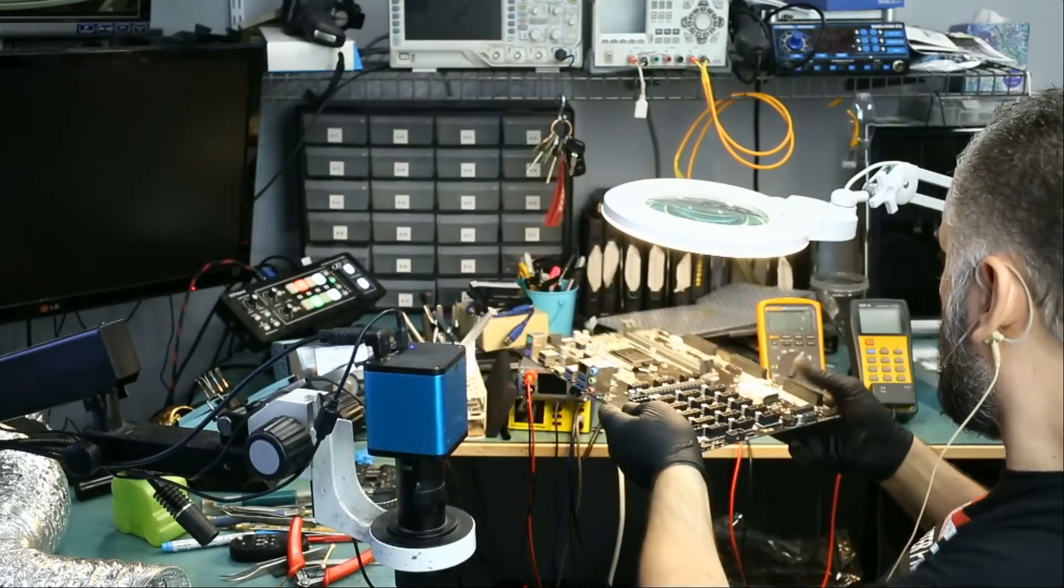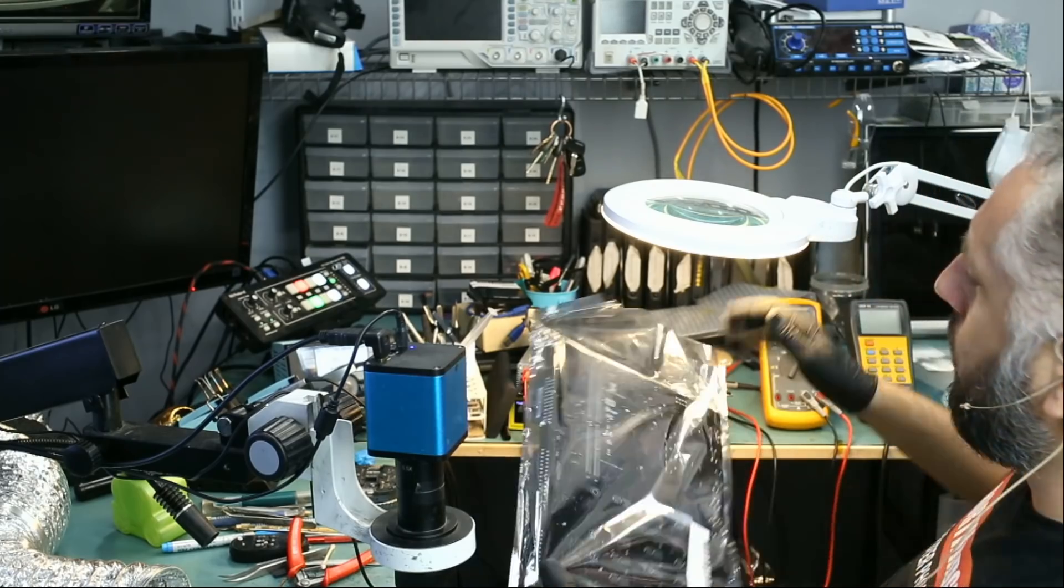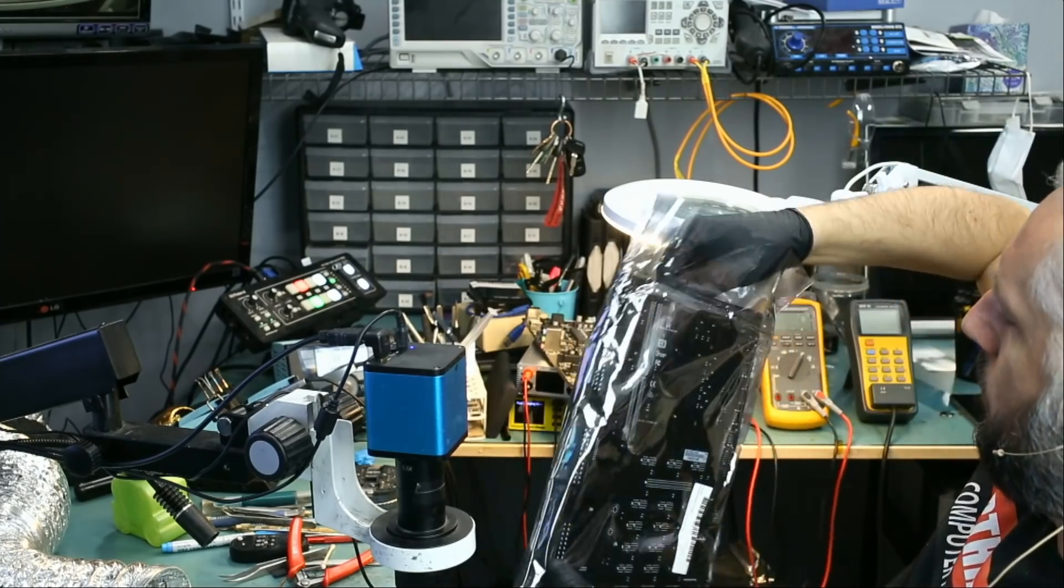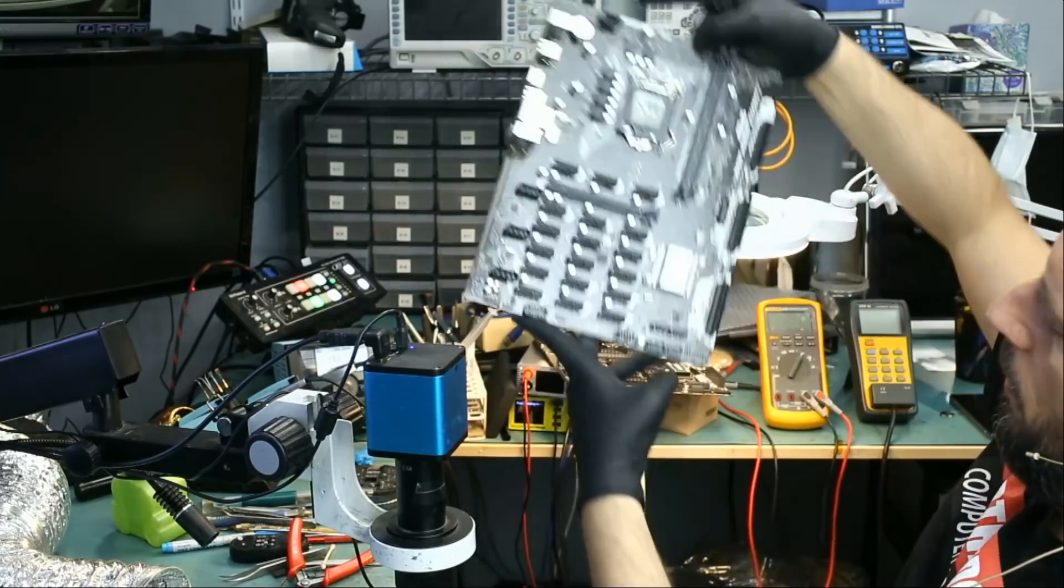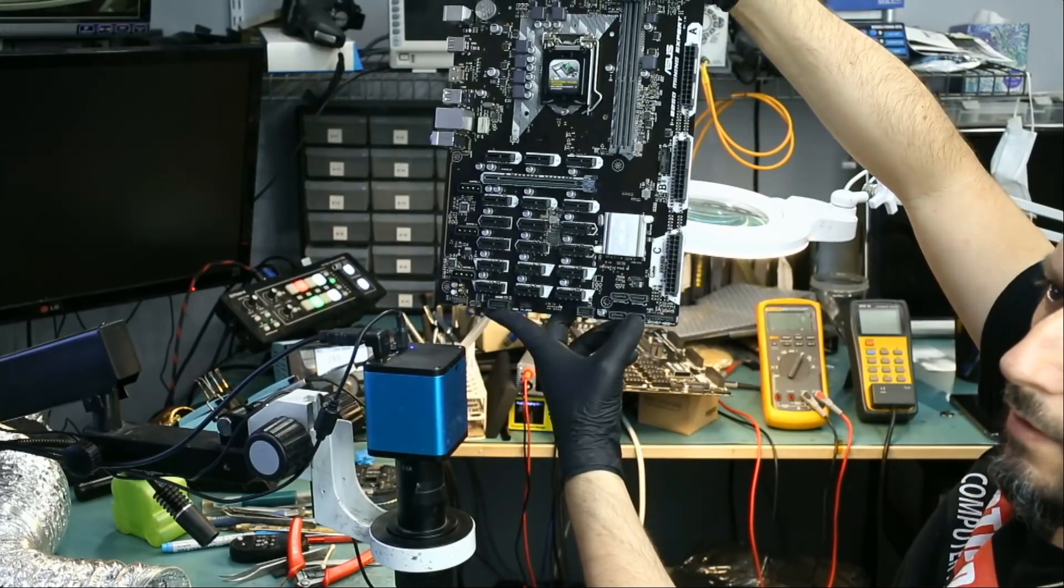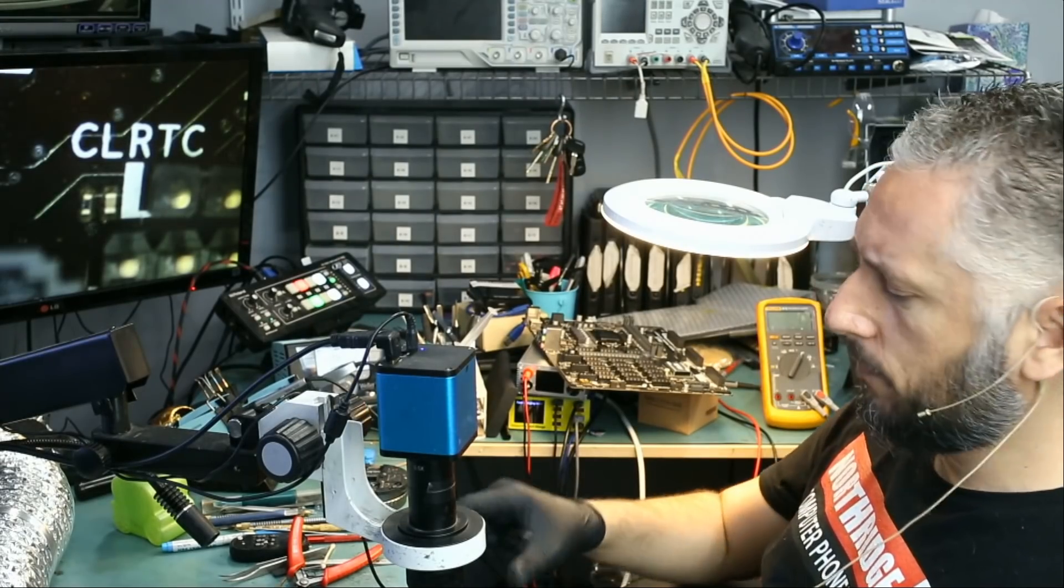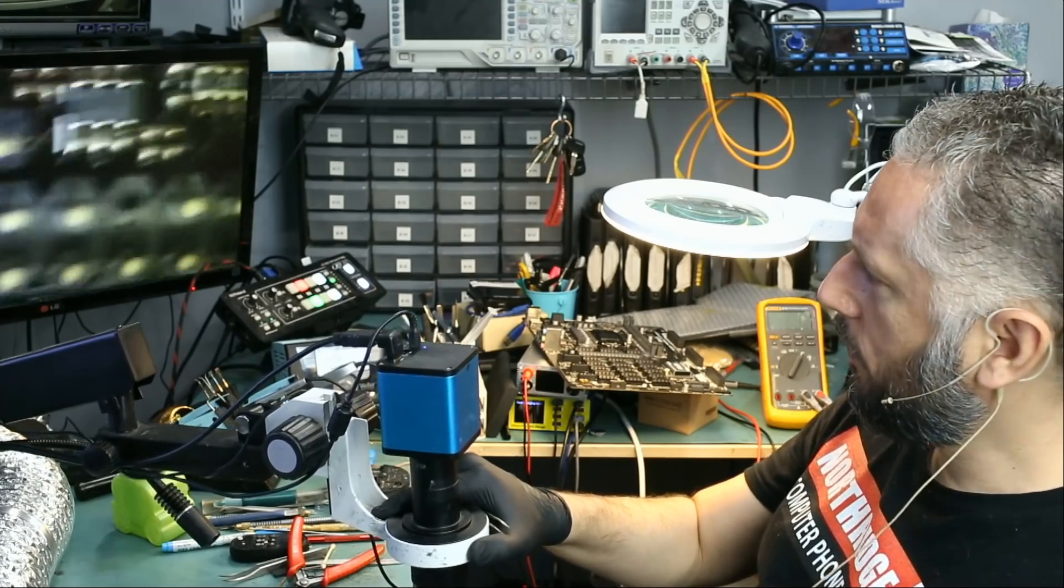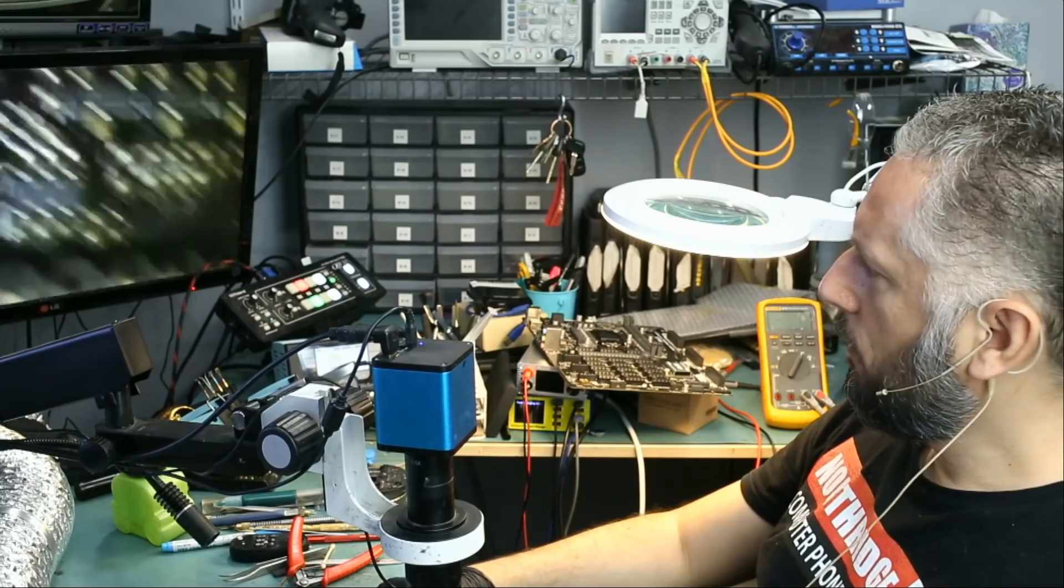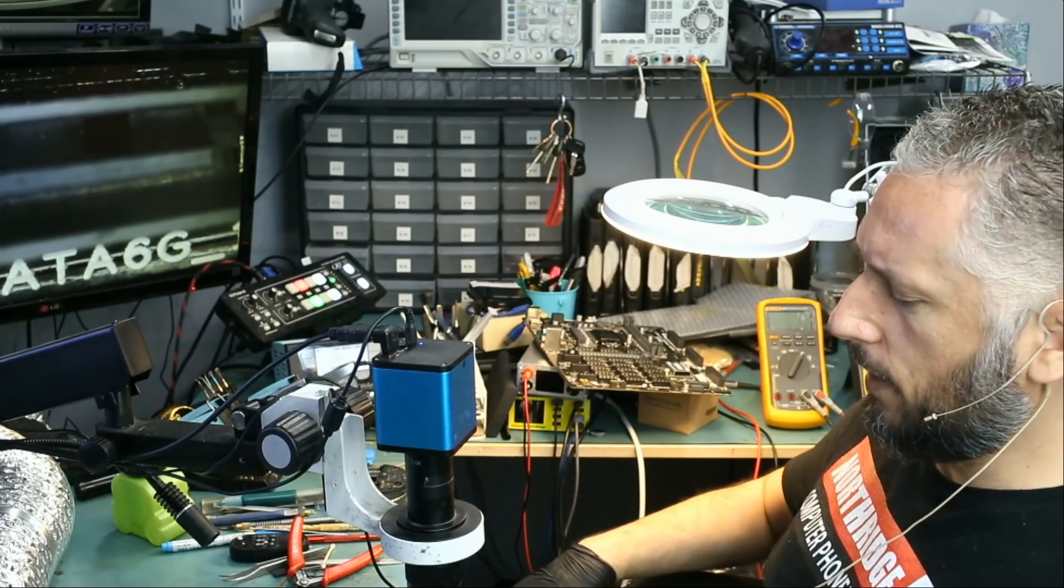Now we're going to grab that connector from the donor board. We're going to remove this connector and right now we're not going to use low melt solder. Let's see how long it takes to remove that connector. My station is currently at 500 degrees Celsius. I'm going to heat up from the bottom so we do not burn that connector.